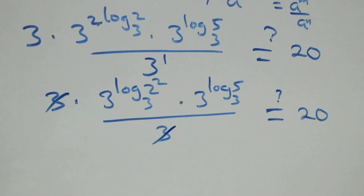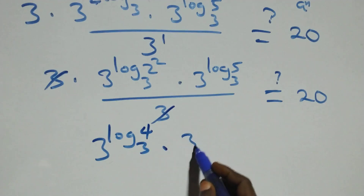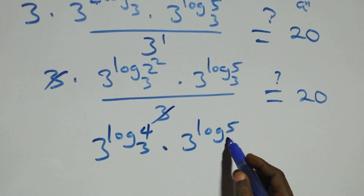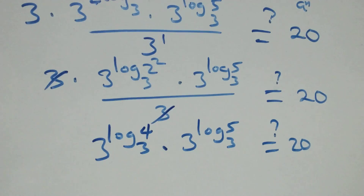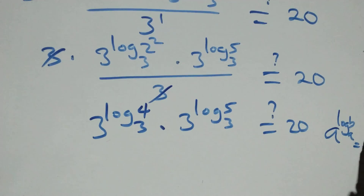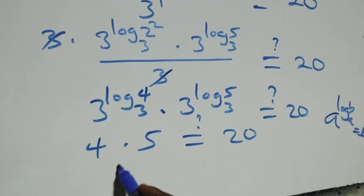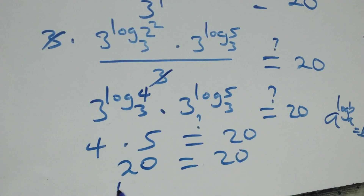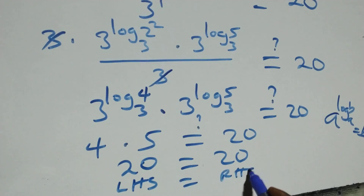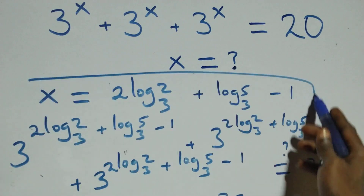The 3s cancel each other, and we have 3 raised to power log(2²) base 3, which equals 4, and 3 raised to power log 5 base 3. We apply the law of logarithms: a raised to power log_a(b) equals b. So we have 4 times 5, which equals 20 — the same as the right-hand side. Left-hand side equals right-hand side, and therefore we conclude that x equals 2·log₂3 plus log₅3 minus 1 satisfies the given problem.